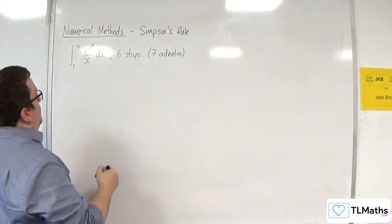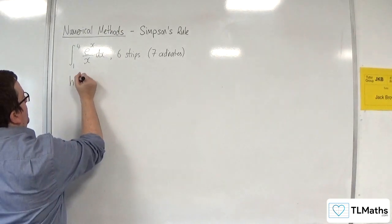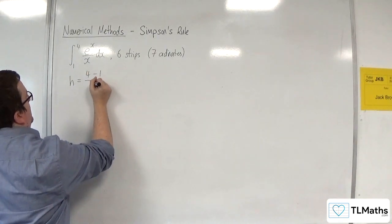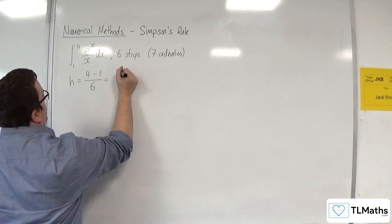So first thing is I'm going to work out h, the width of each strip. So 4 take away 1 divided by the number of strips, so that would be 1 half.